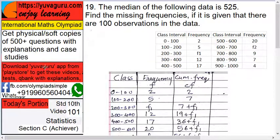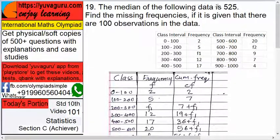Hi friends, welcome to International Maths Olympiad videos, Standard 10th, video number 101, Statistics Section C achiever, toughest one. Let's start. The median of the following data is 525. Find the missing frequencies if there are 100 observations in the data. This means total observations are 100.